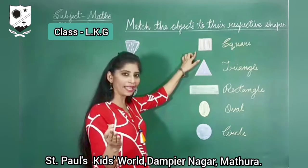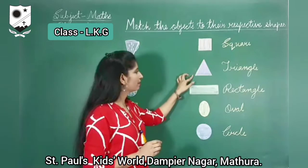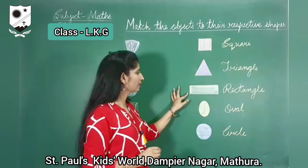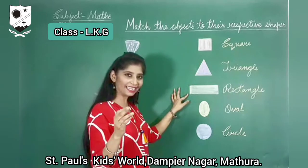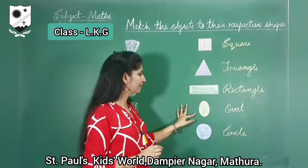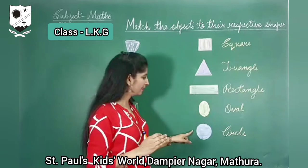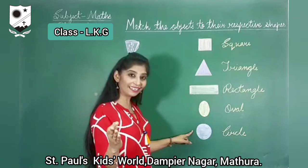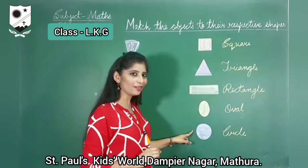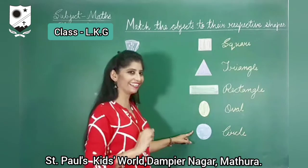Square. Triangle. Rectangle. Oval. Circle. Round, round, circle.